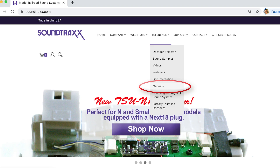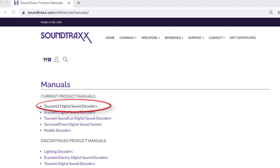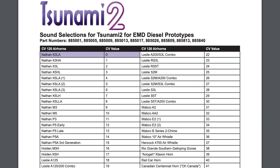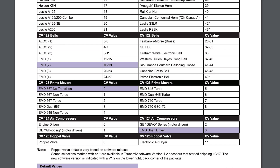When we look at our Soundtracks sound selection reference that you can find on our website at Soundtracks.com along the manuals, you can see that this EMD decoder has nine different diesel prime movers. CV123 has a value range between zero and eight to select the nine different diesel prime movers. So now looking at the list, we can see that CV123 set to a value of five will select the 645 turbocharged prime mover.